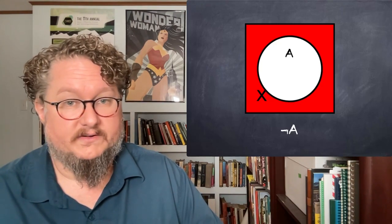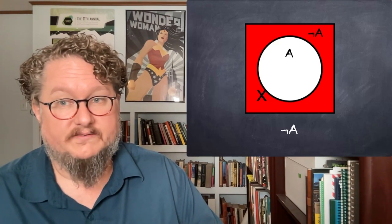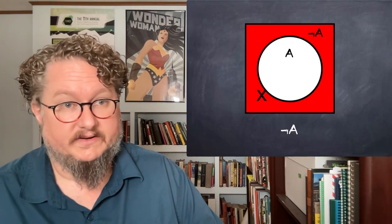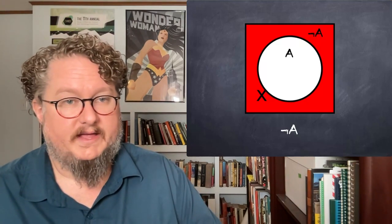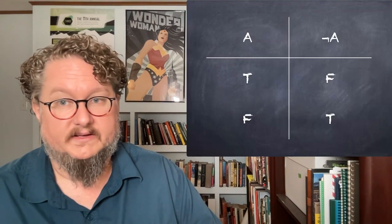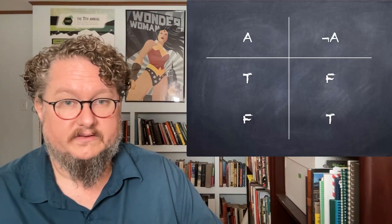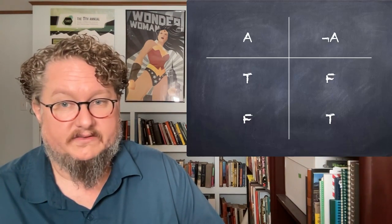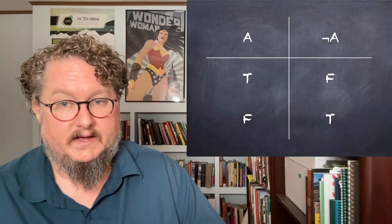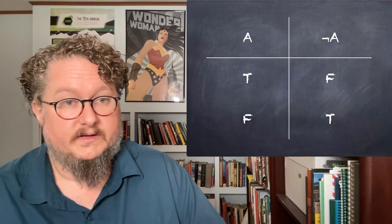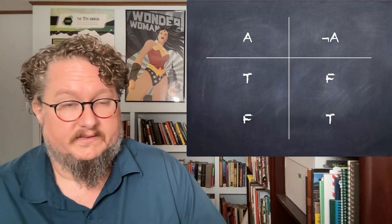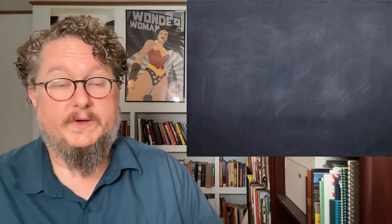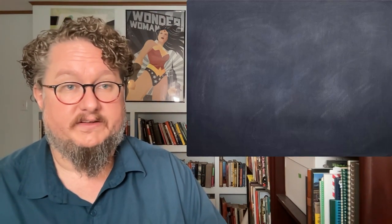Look at the Venn diagram for negation. The red space represents when the connective is true and the white space is when it's false. If the inside of the circle is our atomic sentence A, the outside is the negation — that's when it's true. The characteristic truth table shows the same thing: whenever A is true, not-A is false; whenever A is false, the negation of A is true. Not-A is truth functional because it takes the truth value of its part A and outputs a new truth value for every input.